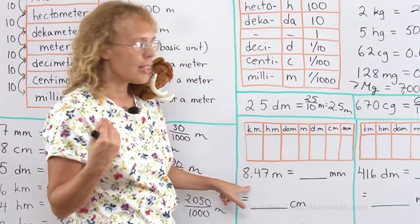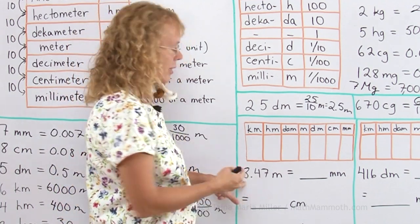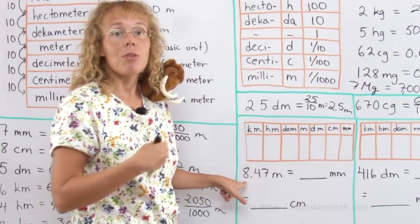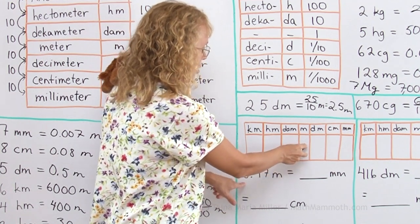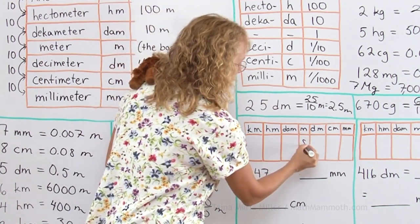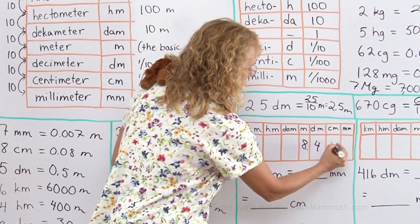So I just think this 8 is in the ones place for the meters. So I have to put 8 here, 8 whole meters right here, then my decimal point and then the other digits here.